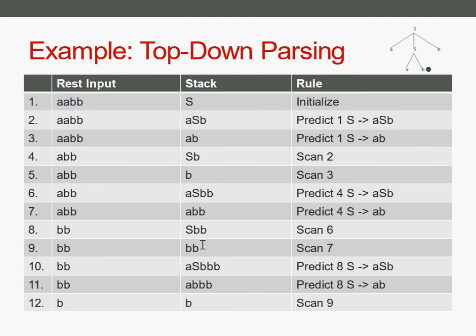From line nine, which has two Bs on both rest input and stack, it performs a scan step, leaving the last two Bs. Then it does another scan step on both Bs and erases them both.